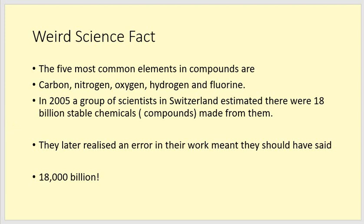Now, here's a weird science fact. Always good to get a weird science fact. The most common elements in compounds are carbon, nitrogen, oxygen, hydrogen, fluorine. Now, carbon, oxygen, and hydrogen, we probably already knew. Nitrogen and fluorine, probably a bit more of a surprise. In 2005, a group of scientists estimated there were 18 billion stable compounds made that included these five elements. They can be in any order. They could be something like H2O water. They could be something like C6H12O6 glucose, which you already know from photosynthesis. Actually, then they later realized they'd made a mistake in their work, and they should have said 18,000 billion. So, there were 1,000 times more than they thought, which shows you if very experienced scientists working together can make a mistake, then it's very important we check our work, because we can make some mistakes as well, because we're not quite as practiced as they are.